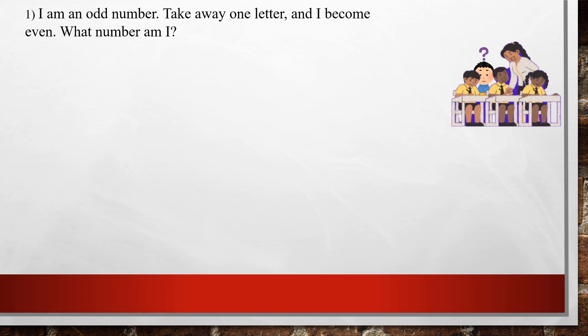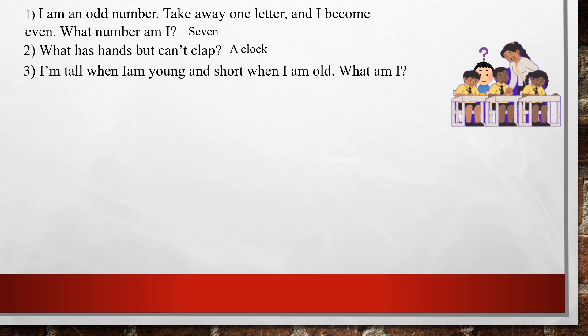There are some riddles — can you answer these? I am an odd number; take away one letter and I become even. What number am I? Seven — if you remove the S it becomes 'even'. Next question: what has hands but can't clap? A clock. I am tall when I am young and short when I am old — what am I? A candle.